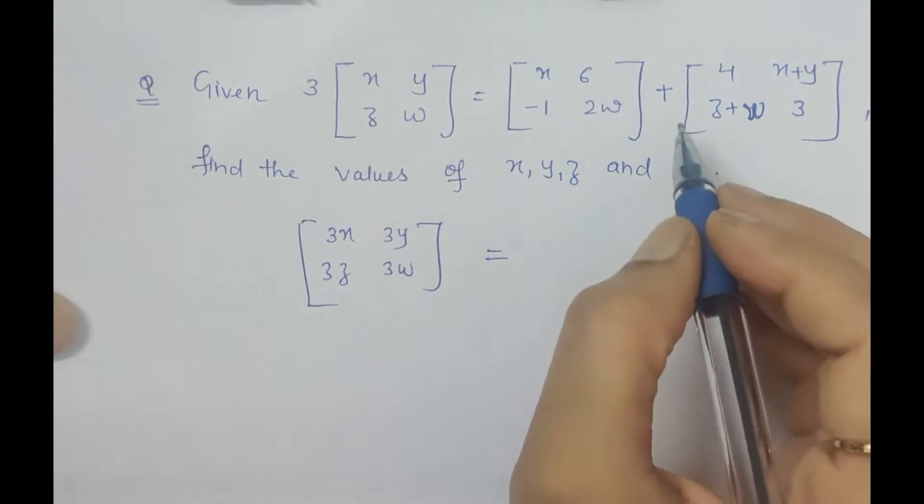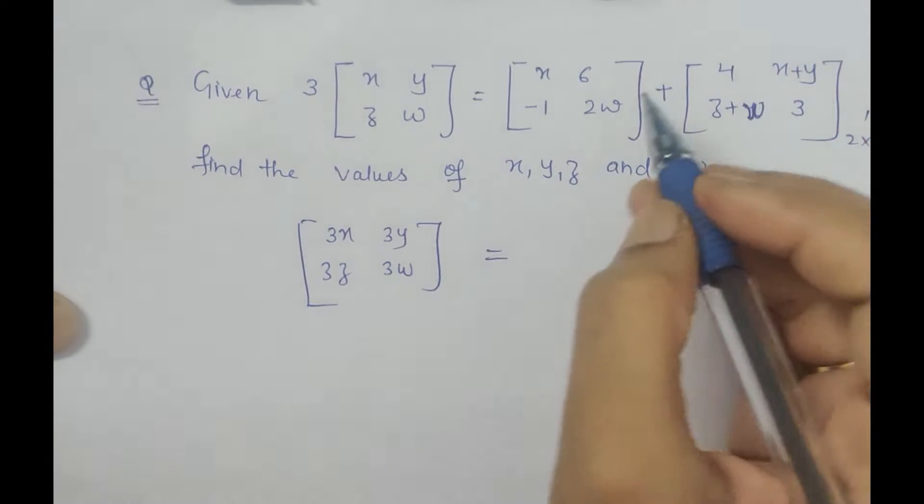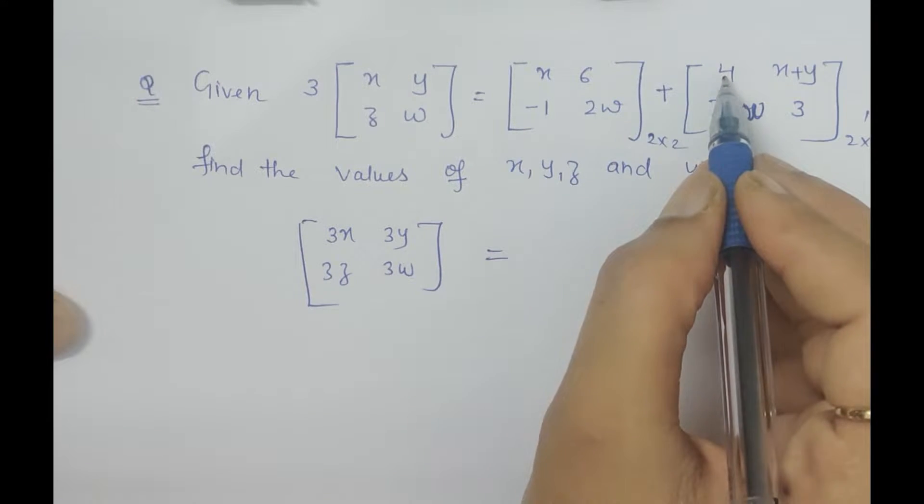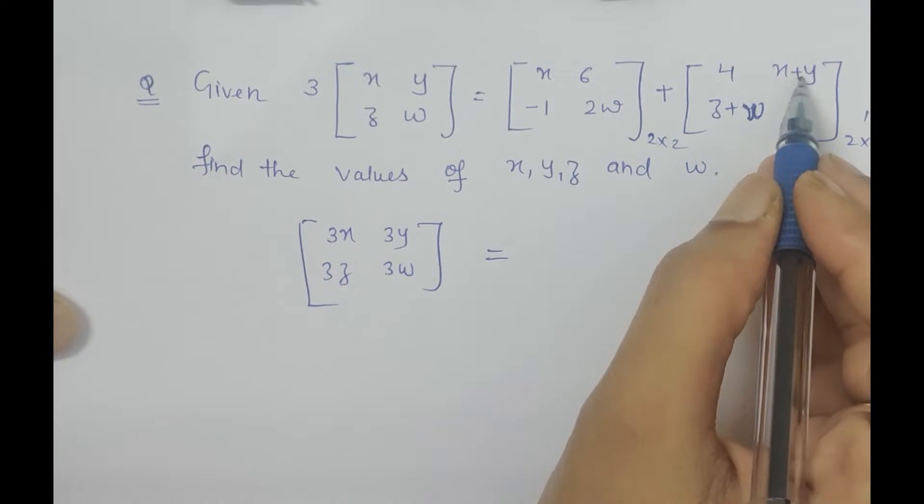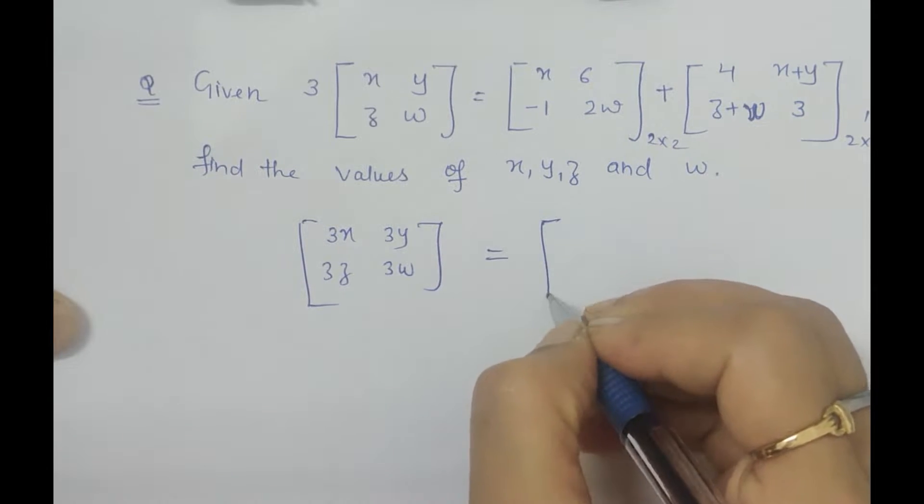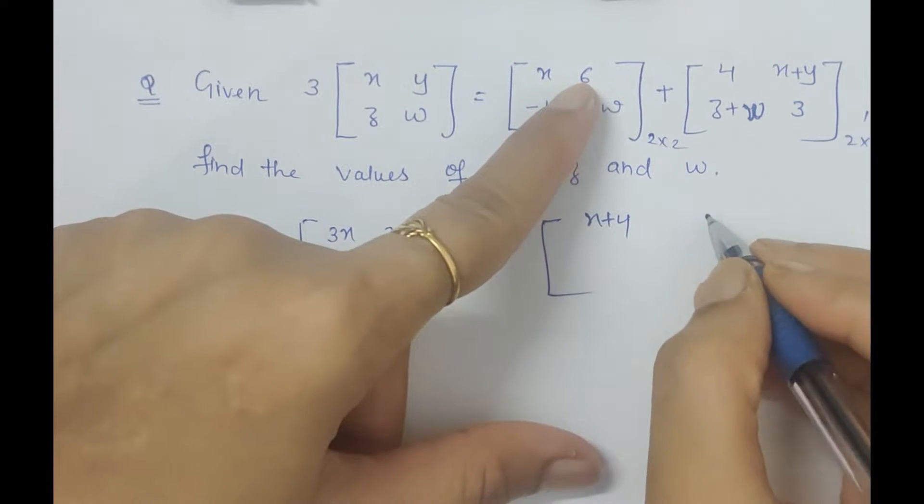Now both matrices are of the same order, 2 by 2, so the corresponding elements will be added. x will be added with 4, 6 will be added with x plus y, minus 1 with z plus w, and 2w with 3. The resultant matrix we get is [x+4, 6+x+y; -1+z+w, 2w+3].